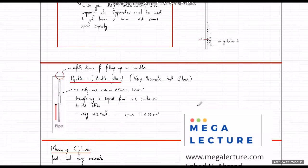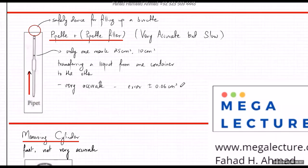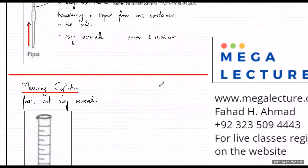Next is the pipette — it has a suction device at the top called a pipette filler. A pipette only has one graduation and measures exactly 25 cm³. It is used to accurately transfer liquid from one container to another — usually into a conical flask. It is very accurate with an error of ±0.06 cm³. This error is not calculated using the smallest graduation formula, but is specified separately.